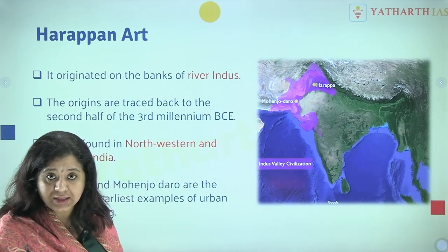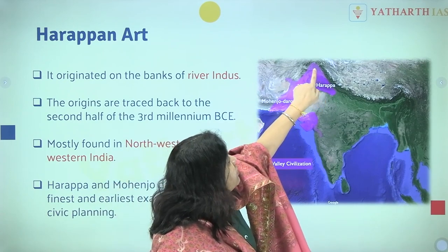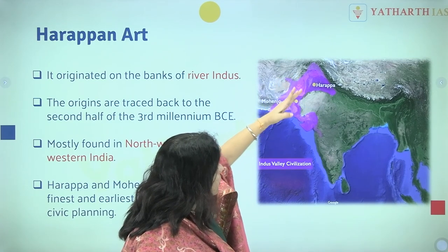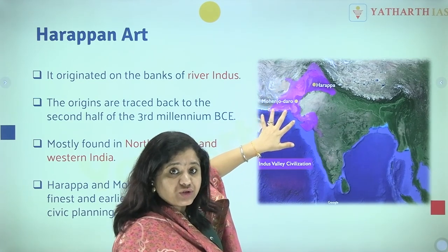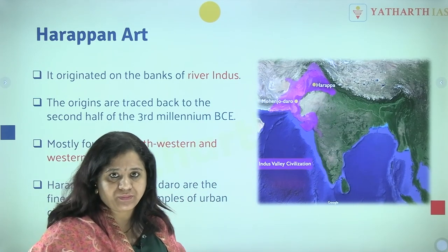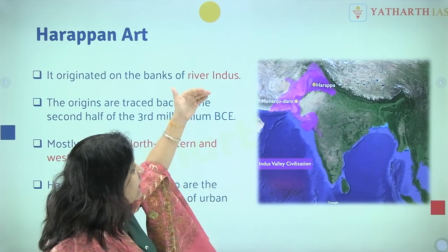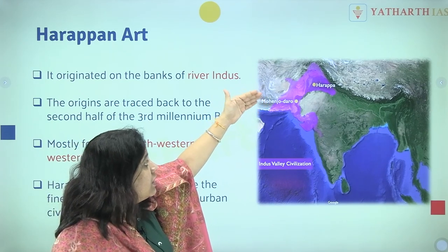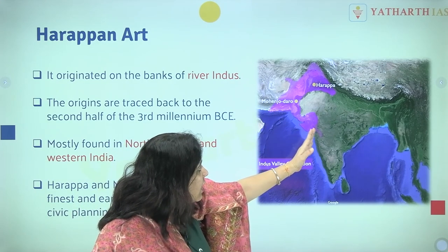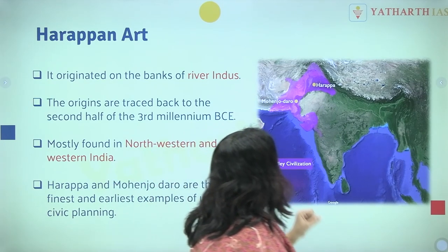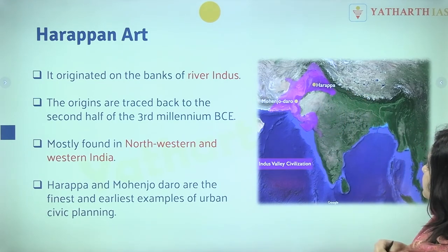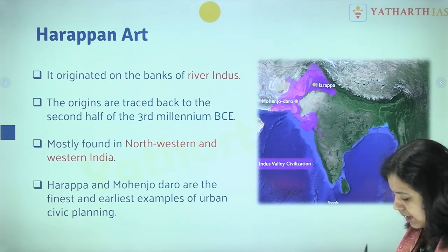Harappa is not just one city. The civilization spread from the northwest of India — from Afghanistan, Jammu Kashmir, the entire northwestern region, Pakistan, and today's Iran — south till Maharashtra. It spread from the Afghanistan hills in north India, covering Pakistan and Iran, and came till Gujarat and South Maharashtra. This is the Indus Valley civilization.